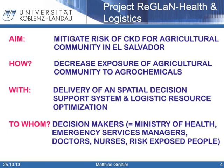This project is aimed at mitigating the risk of chronic kidney disease for agricultural communities in El Salvador. We are working on concepts to decrease the exposure of agricultural communities to agrochemicals. One approach is the delivery of a spatial decision support system using logistic resource optimization. The results will be provided to decision makers, including any decision-making level from health administration to doctors, nurses, and also risk-exposed people.